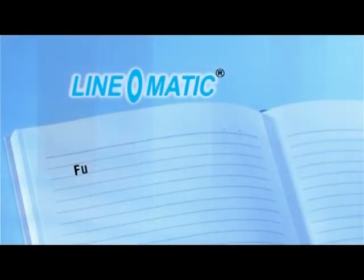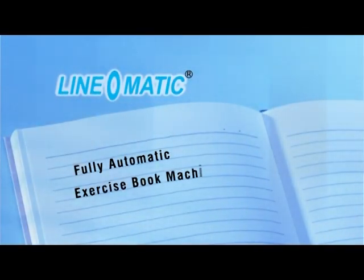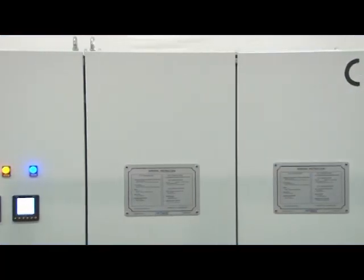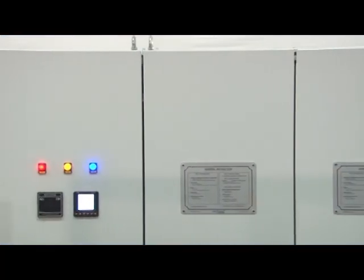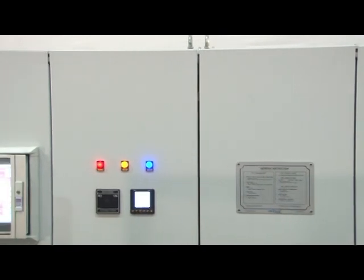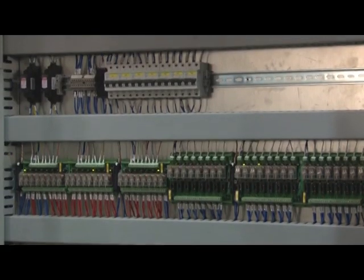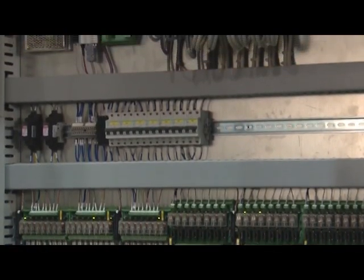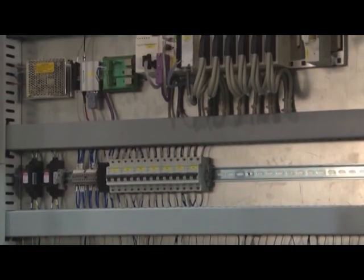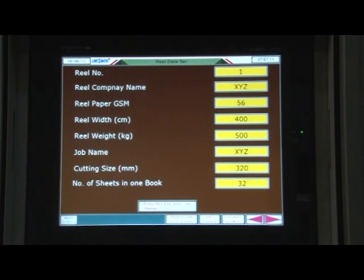Linomatic fully automatic exercise book machine is provided with a high tech electronic control panel suitable for operating all electrical and electronic instruments with air cooling system. The automation system is based on the latest PLC from the world leader.